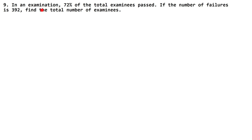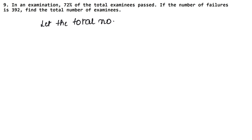In an examination, 72% of the total examinees passed. If the number of failures is 392, then we will find the total number of examinees — that is, how many people appeared in the exam. So, for what we don't know, we let it be a variable. Let the total number of examinees be X.